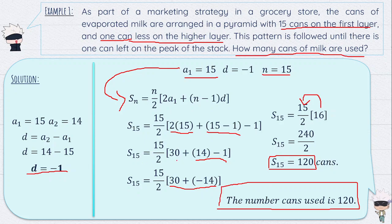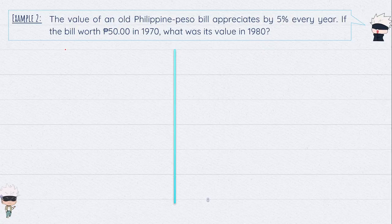That's all for example number 1. For example number 2, here is the problem: The value of an old Philippine Peso Bill appreciates by 5% every year. If the bill is worth 50 pesos in 1970, what was its value in 1980?